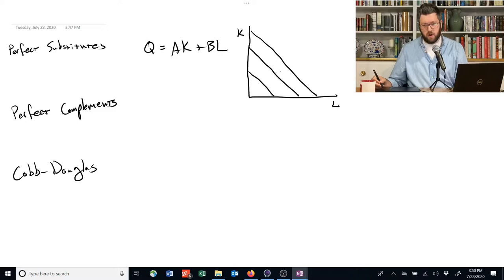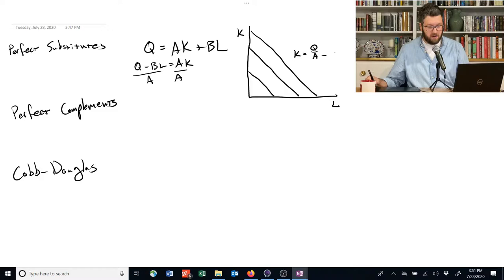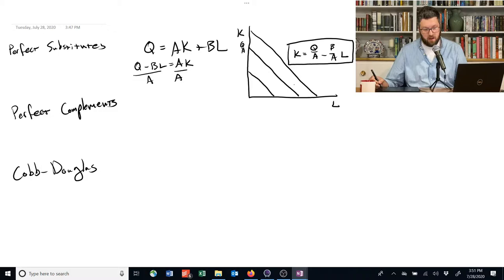We can solve this production function for k to express an equation for the isoquant. So to do that, we need to subtract bl from both sides, and then we need to divide both sides by a. And in doing so, we obtain an equation like k equals q over a minus b over a times l. And this is basically the formula for any line. So this q divided by a is a constant up here, and then as we add l, we subtract more and more, and we always subtract at a constant rate.